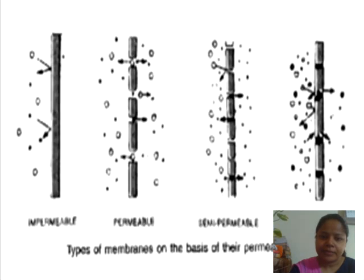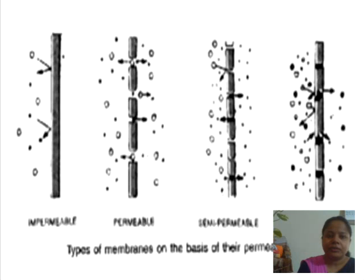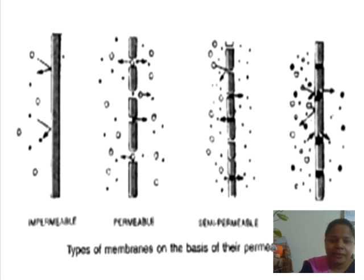Permeability can be of the following types: impermeable membrane, permeable membrane, semipermeable membrane, and differentially permeable membrane. An impermeable membrane, as the diagram shows, does not allow any of the solute or solvent particles to move across it.